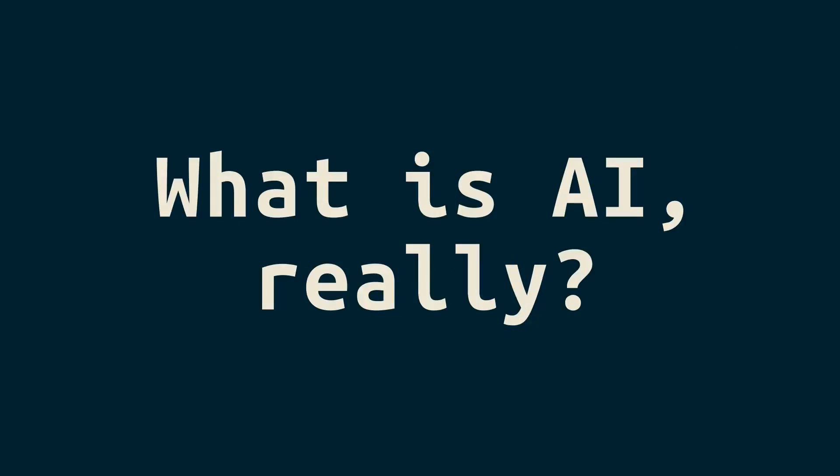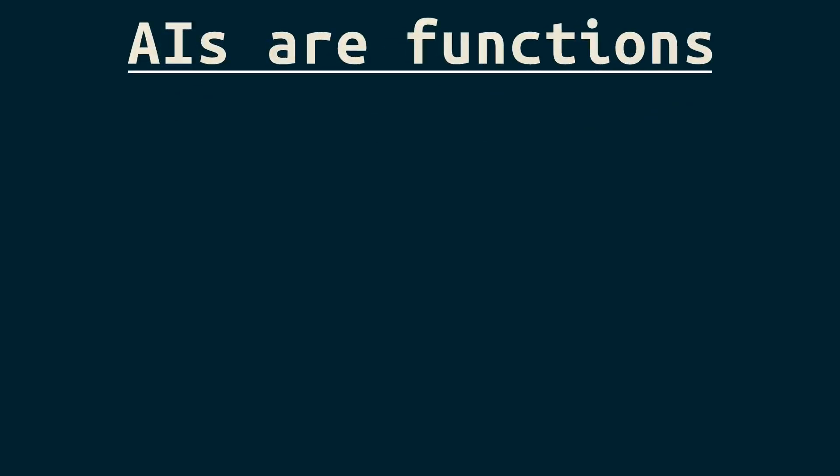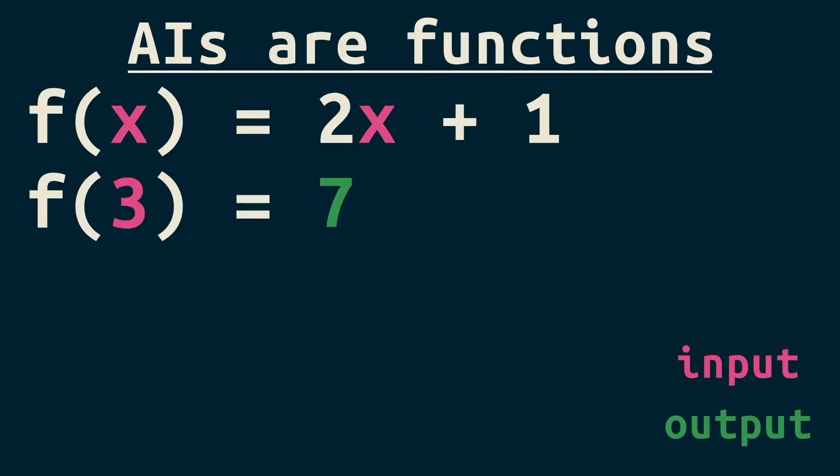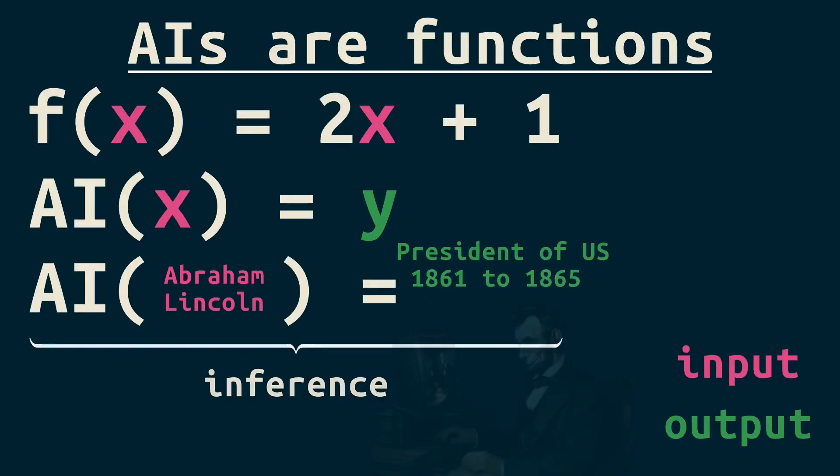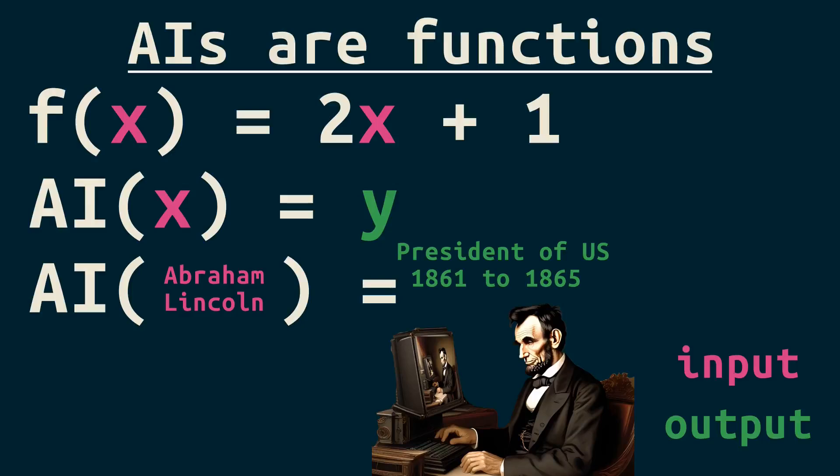I said earlier that AIs are systems of math. Let me clarify. They're functions. Here's a simple function, like you'd see in math class. It takes input and produces a number for output. AIs are not entirely different. But when an AI takes our input and gives us output, we call it inference. The output might look like a sentence or an image to us. But inside the computer, it's all numbers.